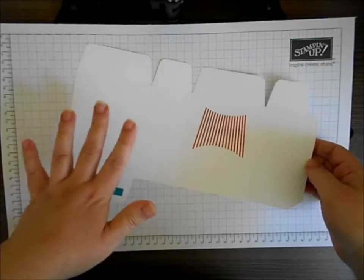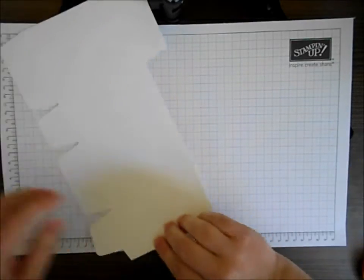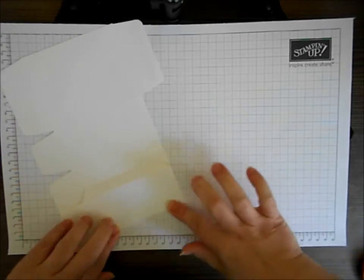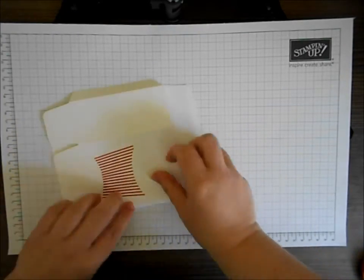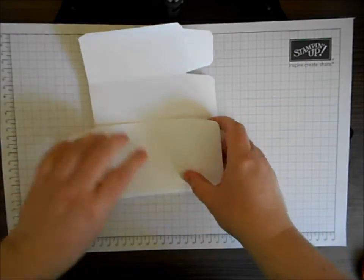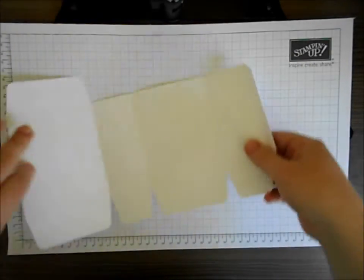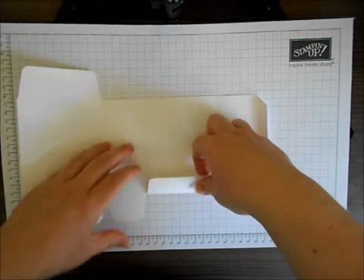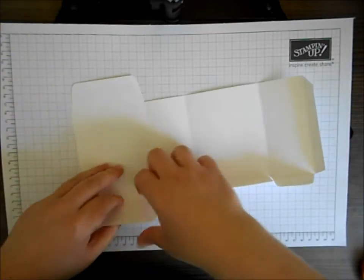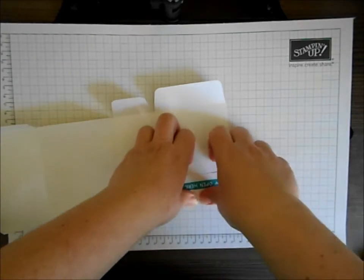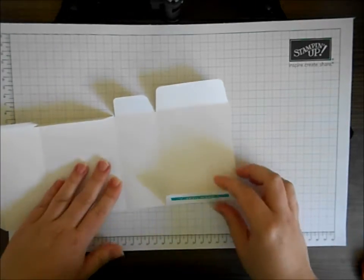So now I've done the stamping that I need to do beforehand you can go ahead and fold all the scores and assemble the bag. Up go the base flaps and there's that flap to close it.